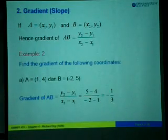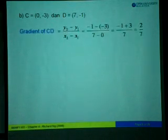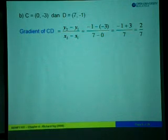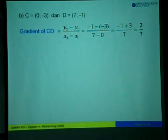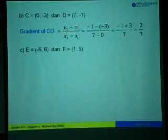We have 1 over negative 3. Next, for coordinates C equals to (0, -3) and D equals to (7, -1), the gradient of CD uses the same formula: y2 minus y1 over x2 minus x1. So y2 minus y1 is negative 1 minus negative 3, giving negative 1 plus 3 equals 2, and x2 minus x1 is 7 minus 0, giving 7. So the gradient of CD is equal to 2 over 7.